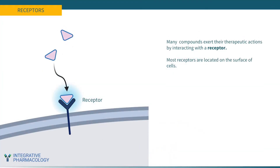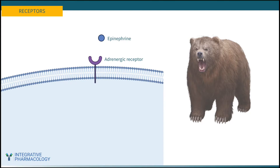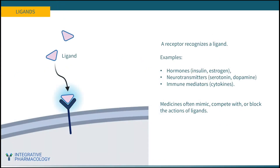Many compounds interact with receptors to exert their therapeutic action. A receptor recognizes and binds a compound — also called a ligand. Most receptors are located on the surface of cells, poised to detect signals from the environment and trigger a rapid response. For example, being chased by a bear triggers the release of epinephrine, which binds to adrenergic receptors on muscle fibers and increases their strength and stamina. Other ligands include hormones like insulin and estrogen, neurotransmitters like serotonin and dopamine, and inflammatory mediators like cytokines. Effective medicines often mimic, compete with, or block the actions of these ligands at their receptor sites.